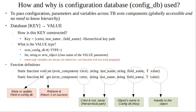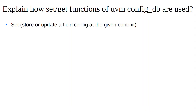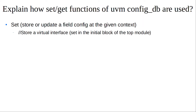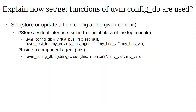Let's look at some implementation examples. The next question is how the set and get functions of the uvm_config_db are used. The first example will be for set, showing how we store a virtual interface. The second set example shows how within an agent we assign a value from the config_db to a monitor's variable.